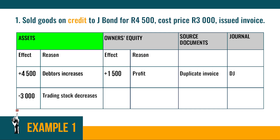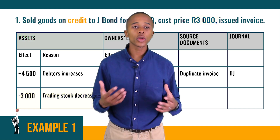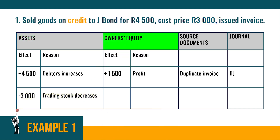Looking at the table: debtors are a current asset to the business because they owe the business money which they must pay back in the future. Debtors increased with the selling price of R4,500. Trading stock, also a current asset, decreases with the cost price of R3,000 because it leaves the business. Since goods were sold for R4,500 and the cost price is R3,000, the business made a profit of R1,500, which increases owner's equity.